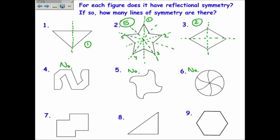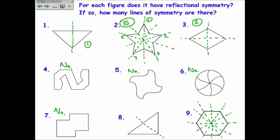Number six is also no. Number seven — we want to say there's a line right here, but if you think about it, this line is short and this line is long, so the answer is no. Number eight does have symmetry diagonally — you could reflect that over and get the exact same image. Number nine is a regular hexagon. It has one down the middle, and through each of the sides and through each of the points — so there are six lines of reflection.